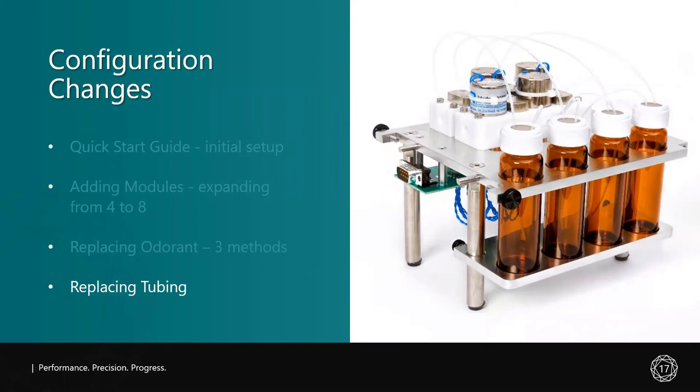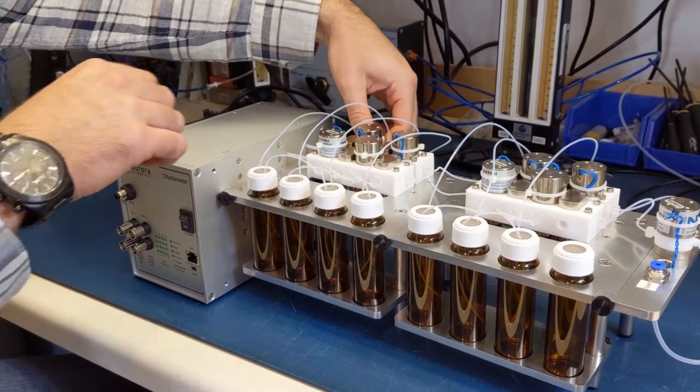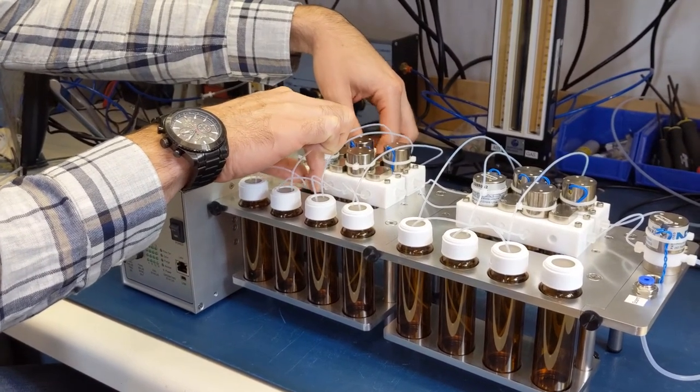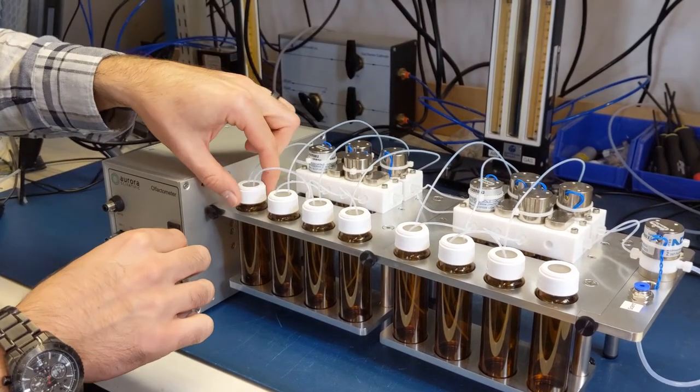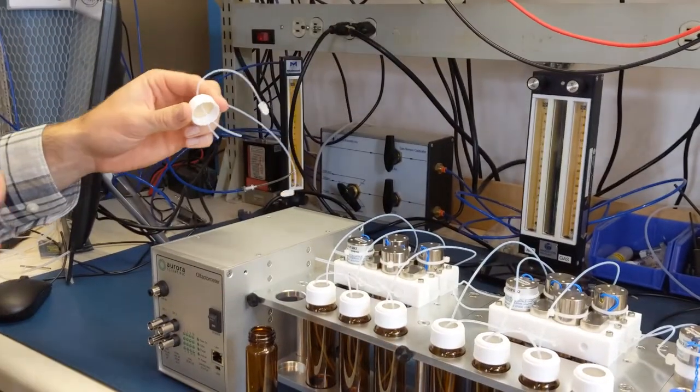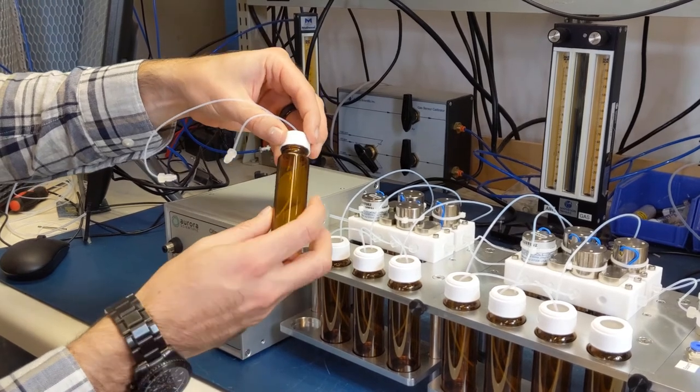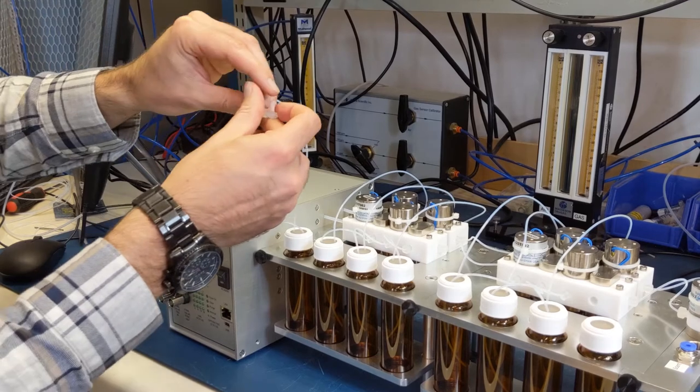Although the system employs Teflon tubing and constant airflow to limit odorants from sticking around in the system, after a period of time, the tubing will need to be replaced, especially when taking into account the volatility of the odorants used. Follow along to learn how to replace vial, manifold, and final valve tubing lines to ensure there is no cross-contamination in the system. Unscrew the threaded connectors for the vial tubing being replaced. Then, remove the cap and tubing assembly from the vial. Replace the cap and tubing with a prefabricated vial cap assembly. Install the vial and reattach the threaded connectors as previously shown.